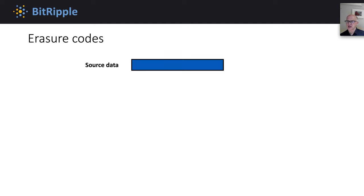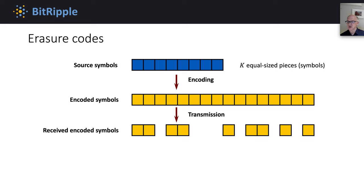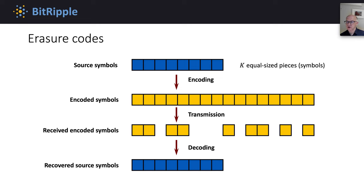In general, there is a block of source data that is to be reliably transferred from a sender to a receiver. The source data is partitioned into equal sized pieces called symbols. Hereafter, we let K denote the number of source symbols. Erasure encoding is applied to the source symbols to generate encoded symbols, where each encoded symbol is the same size as the source symbol. Encoded symbols are placed into packets with a header and transmitted over a network to a receiver, where some packet loss may occur. At the receiver, whatever encoded symbols arrive are used to recover the original source symbols using erasure decoding. Ideally, an erasure code has the property that the K source symbols can be recovered if at least K encoded symbols are received.